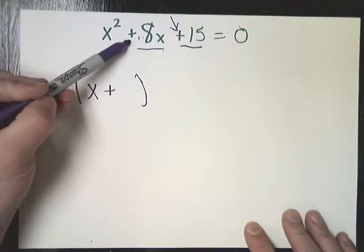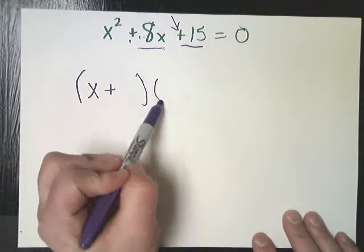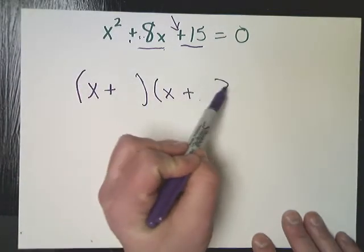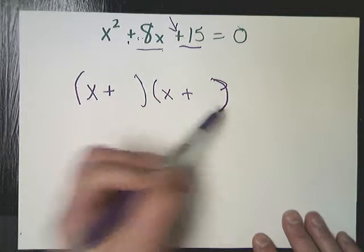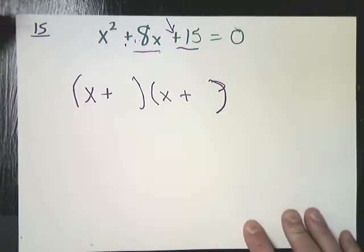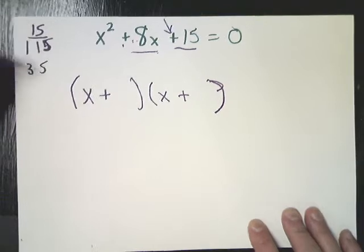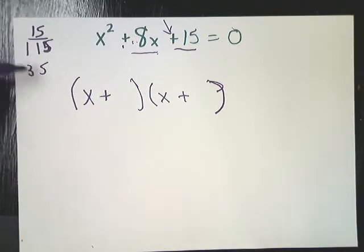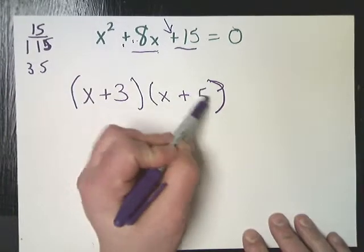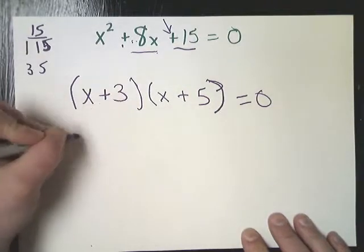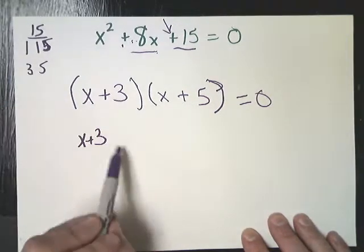I know they're both plus, by the way, because if they're the same, this sign tells you what they are. So it's x plus something and x plus something else. If I do a factor list for 15, I do 1 and 15 and 3 and 5. Well, 1 plus 15 is not 8, but 3 and 5 is. So here and here. Now those are set equal to 0, so I just need to do them individually equal to 0.